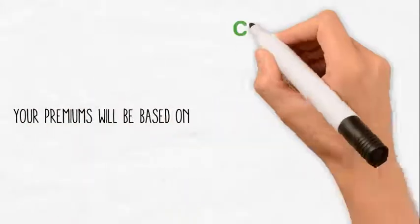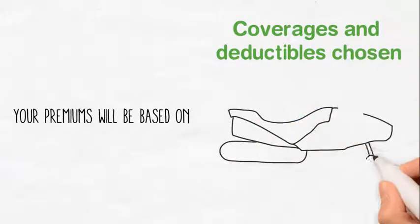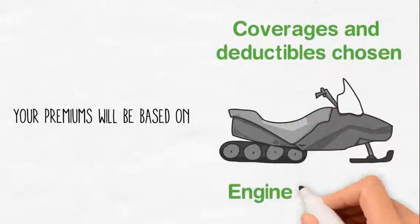Your premiums will be based on the coverages and deductibles chosen, as well as the year of the snowmobile and its engine size, cc's.